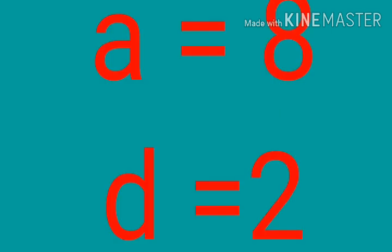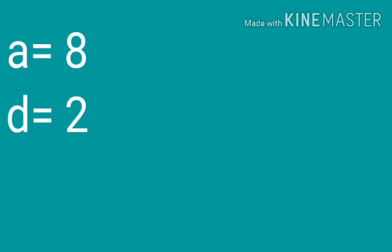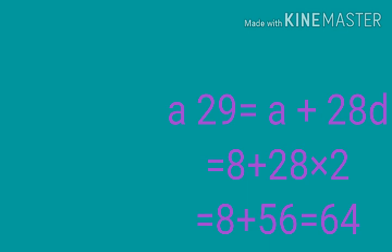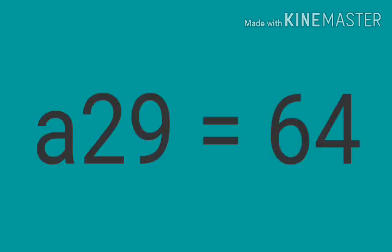Substituting A equal 8 and D equal 2 into the equation A29 equal A plus 28D: 8 plus 28 into 2. First 28 into 2 equal 56, then 8 plus 56 equal 64. So A29 equal 64. The 29th term is 64.